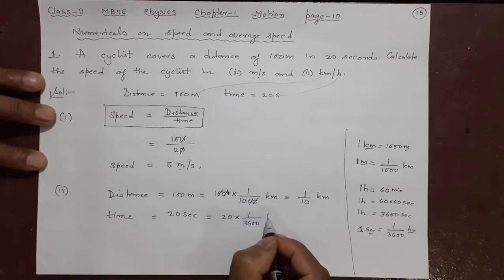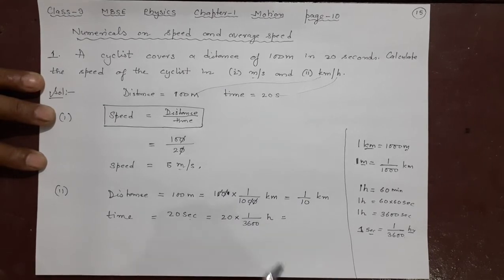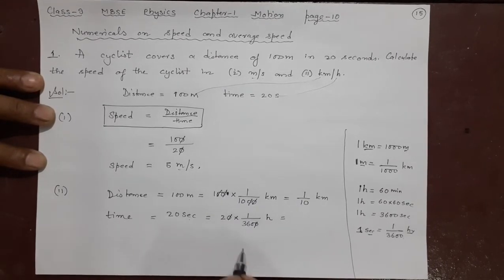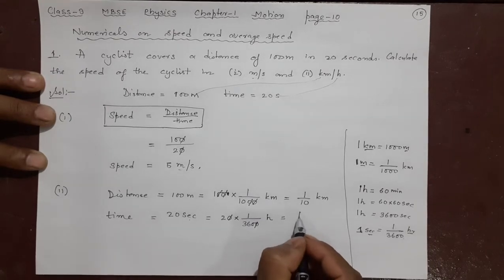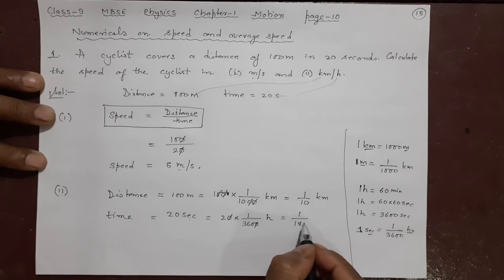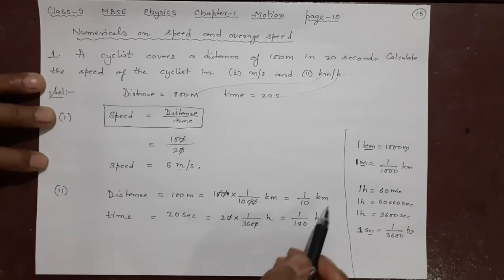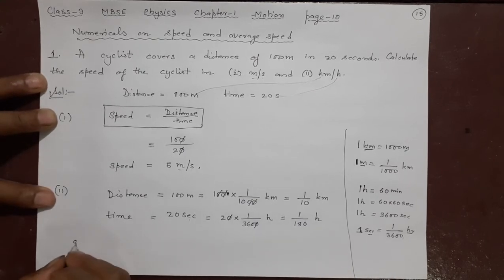Now it becomes hours. You need not write HR, just H is enough. Cancel. 2 times 18 is 36. 2. Right. What is this? 1 by 180 hours. Now they are ready - kilometer and hours. Let us write the speed now.